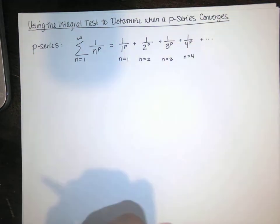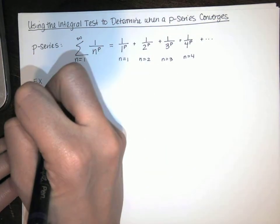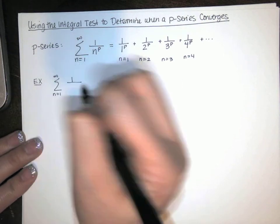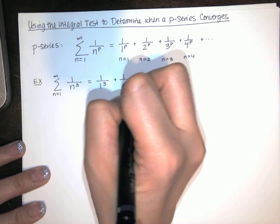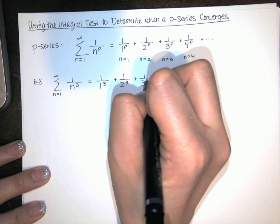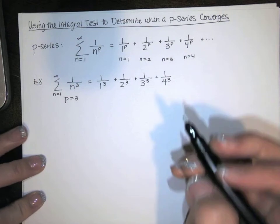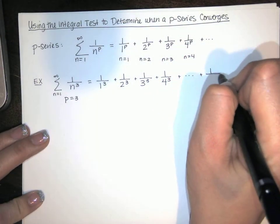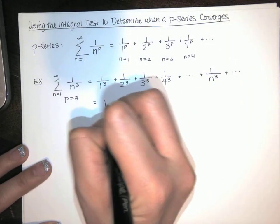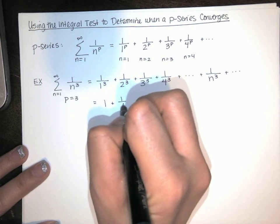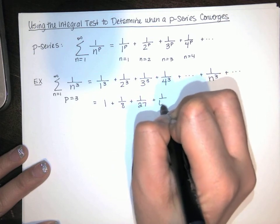Just to give you some concrete examples. Here's one: the sum as n goes from 1 to infinity of 1 over n cubed. That's 1 over 1 cubed plus 1 over 2 cubed plus 1 over 3 cubed plus 1 over 4 cubed. Here p is clearly 3. We're raising all those denominators to the third power, and so the nth term is 1 over n cubed. We can simplify these: 1, 1/8, 1/27, 1/64, and so on.